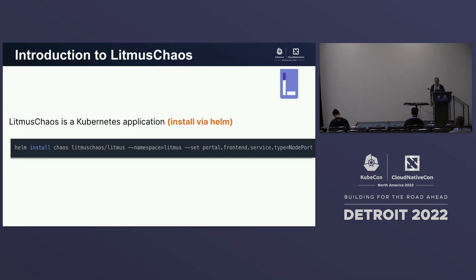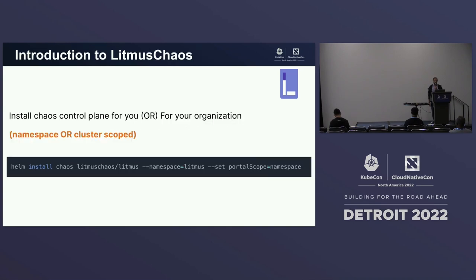Litmus Chaos is a project that started around 2018-19. We are an incubation project. The Litmus tool or framework is Kubernetes-native — it's just a Kubernetes application. You can install it via a Helm command. You can do a helm install and configure what you need in the values. You can do the installation as a limited scope for yourself or at a larger scale for your organization.